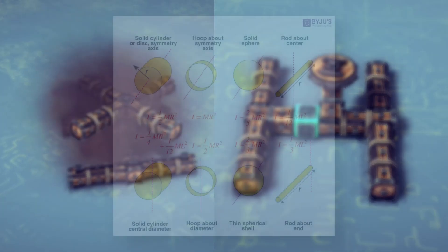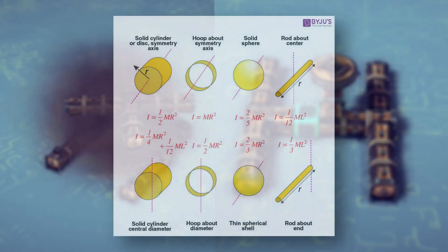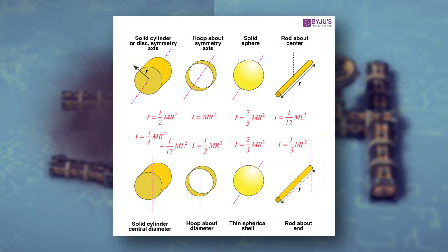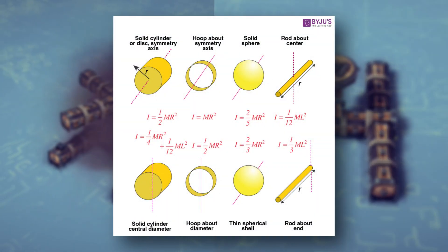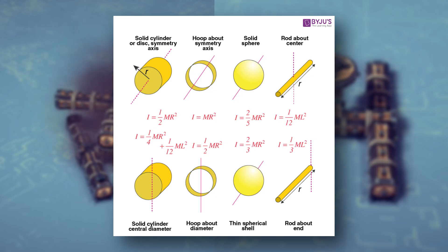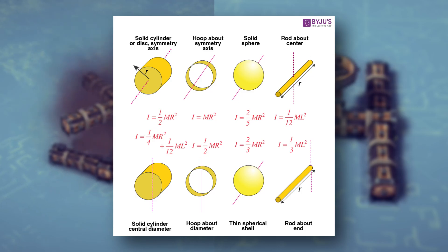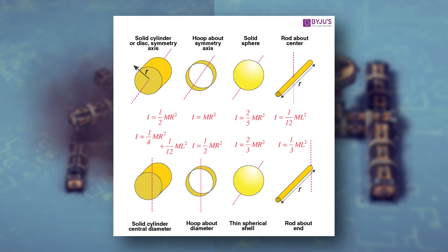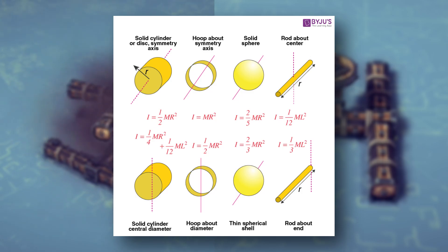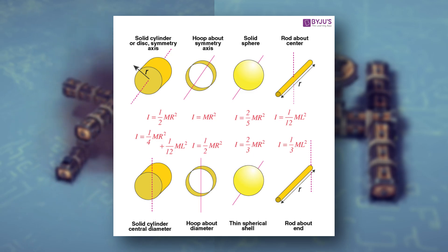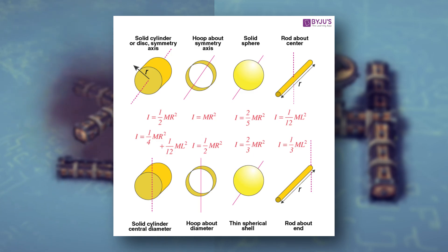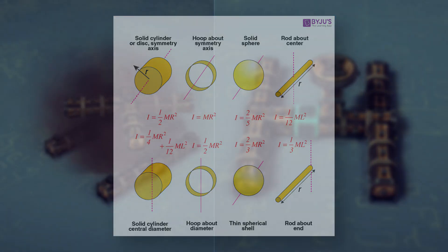Here is a general chart of the different moments of inertia for each shape. There's no need to memorize these as you'll be given them, but for AP Physics C takers, there will be a question where you'll have to prove the rotational inertia through integrals. I'll go over that process in a later video as well.